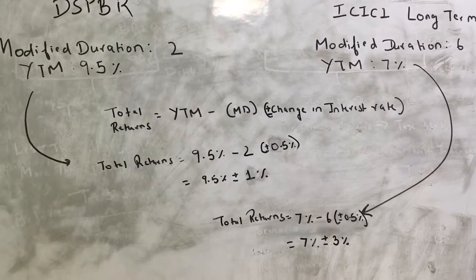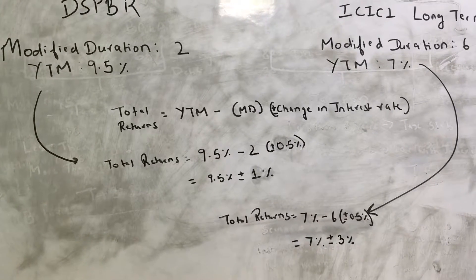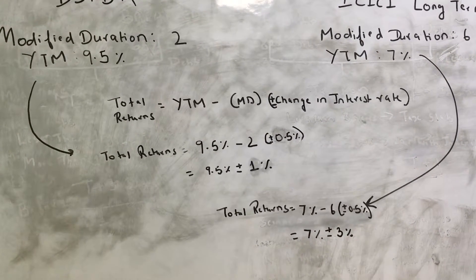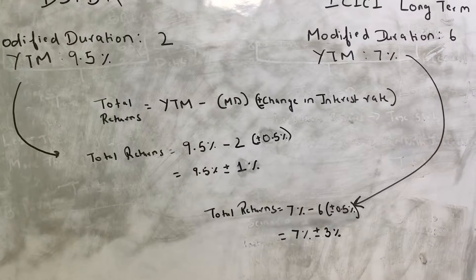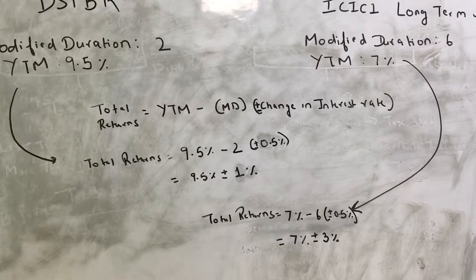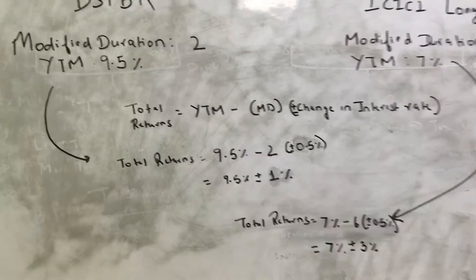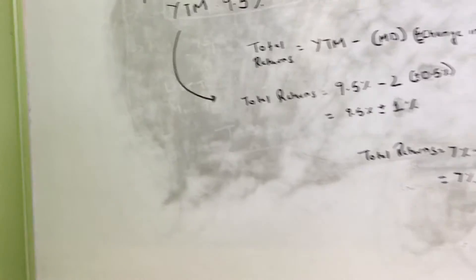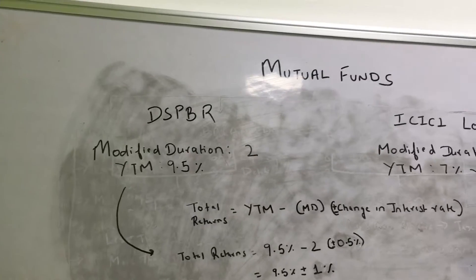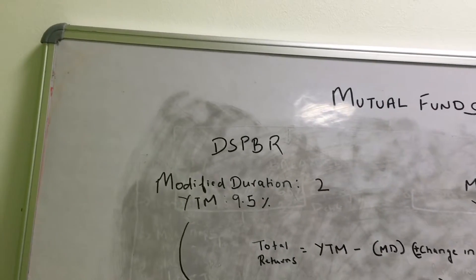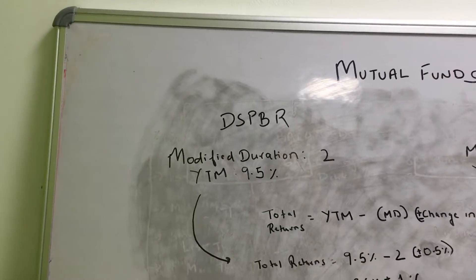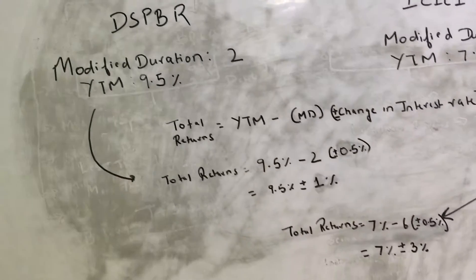So total returns of the fund equals YTM minus modified duration plus minus the change in interest rate. If the interest rate goes down it's minus something, and if the interest rate goes up it's plus something.